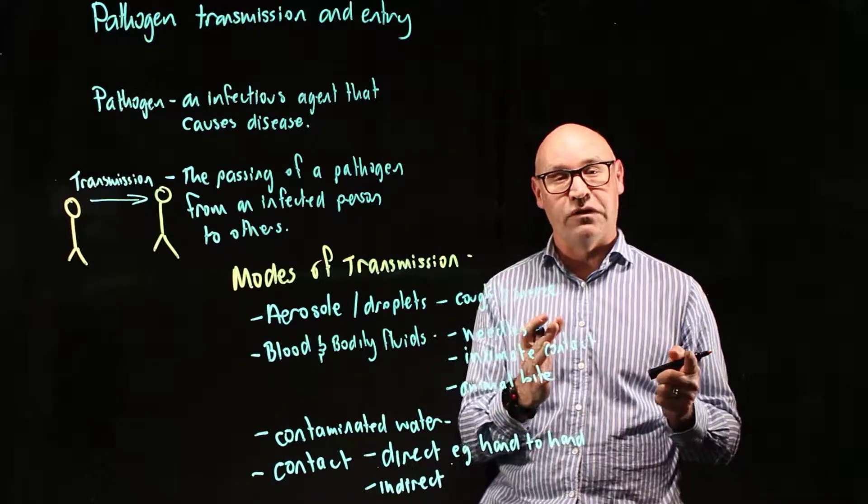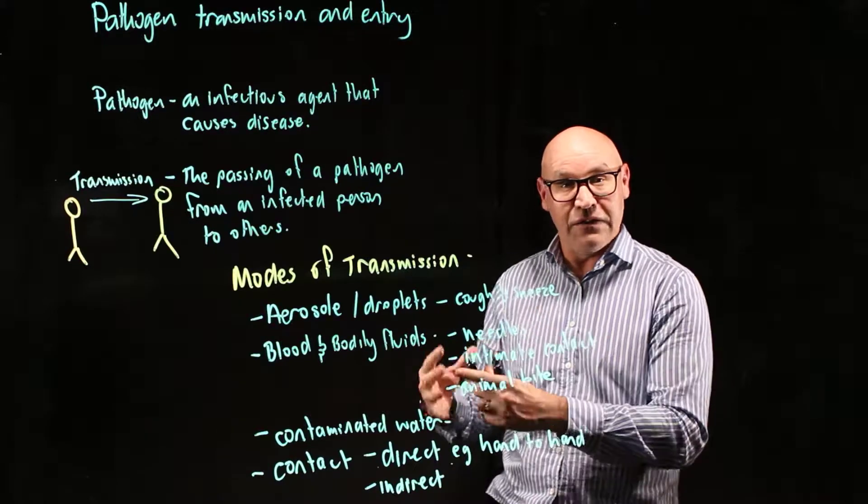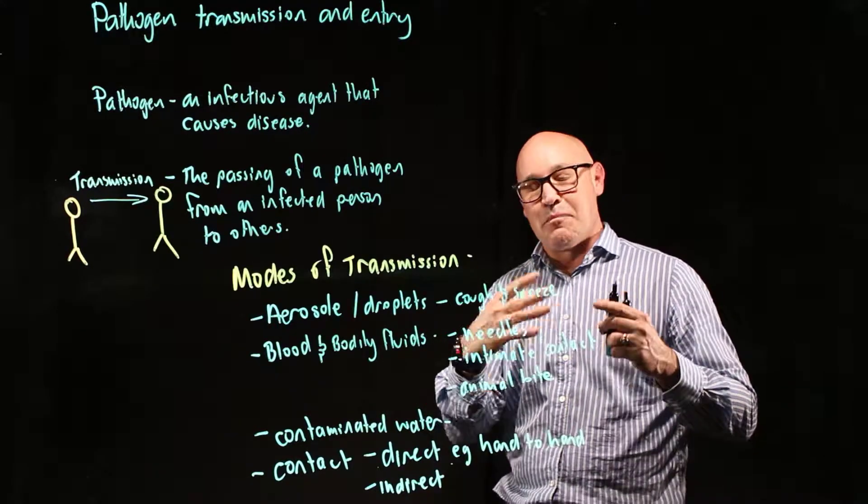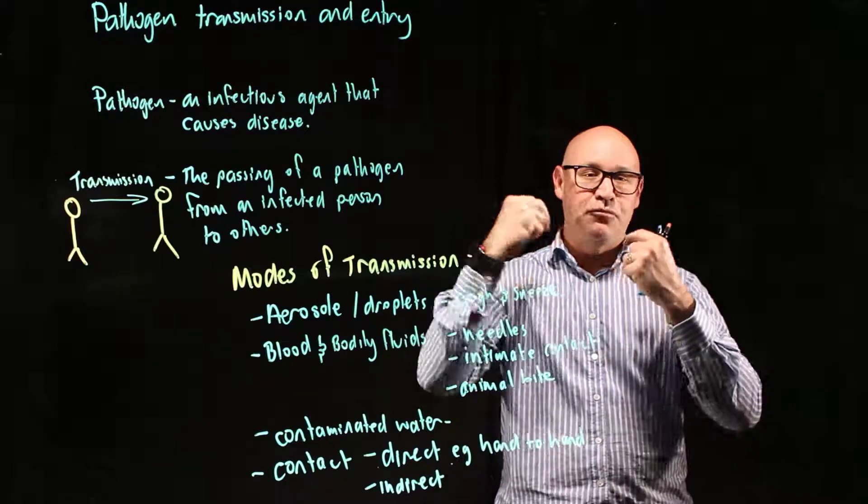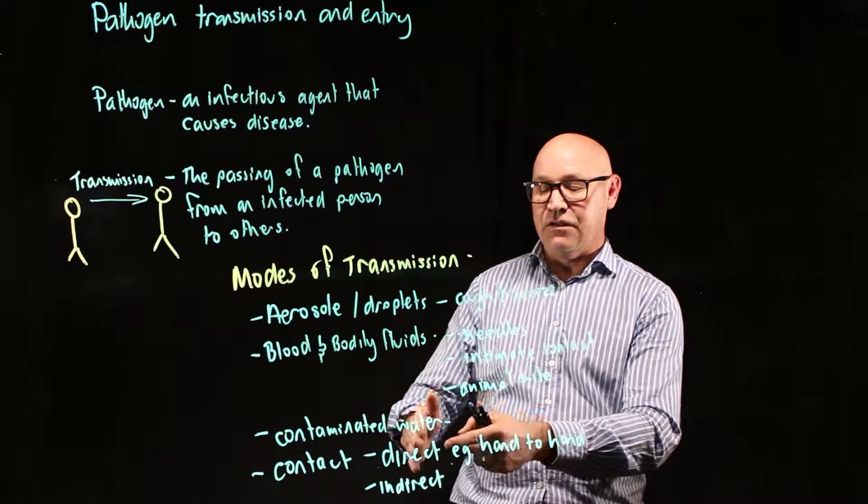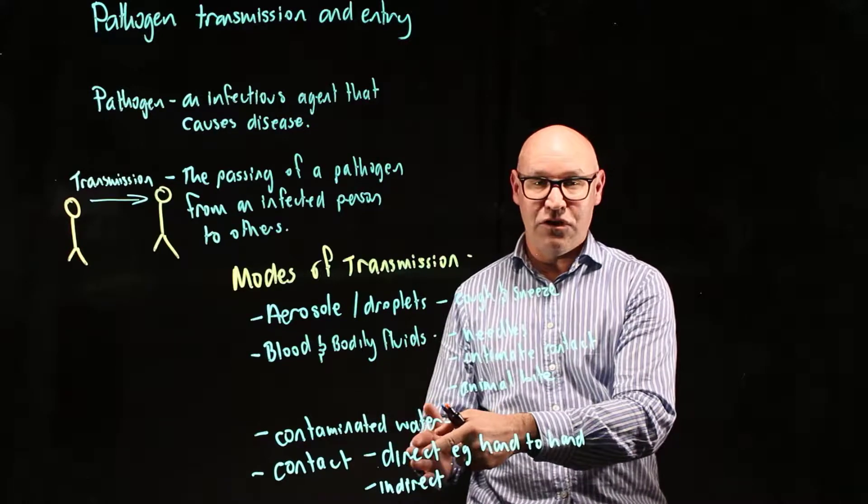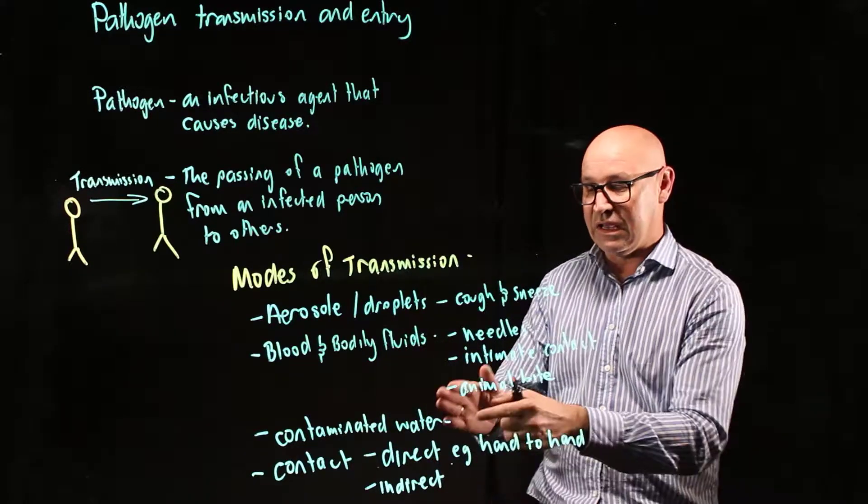So it's the faecal-oral route. It's gone from faeces via money or maybe somebody touching a doorknob, and then somebody else has touched that and then put their hands in their mouth. And that's a faecal-oral route, which is an indirect contact.